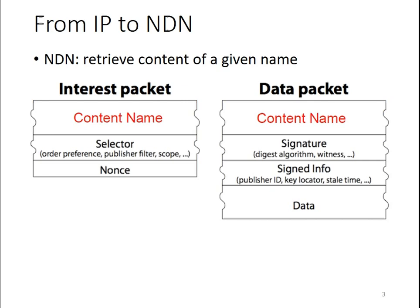NDN uses two types of packets: interest and data. The interest packet is a question to the network — it asks the network to retrieve a piece of content. The data packet is the answer from the network; it carries the content payload. The interest and data should have the same content name.